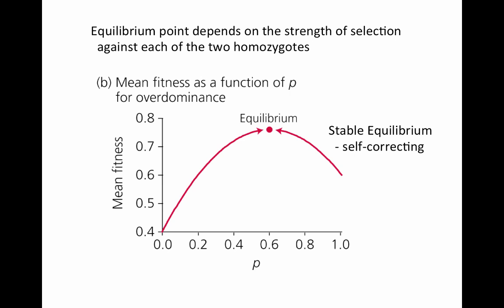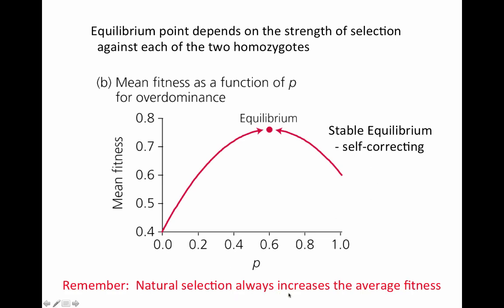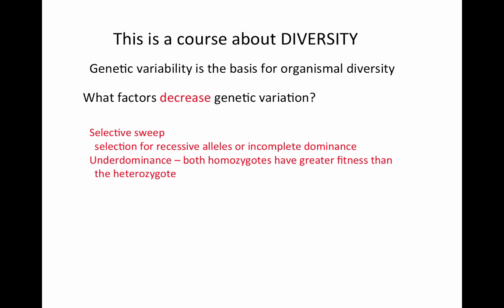The equilibrium frequency between the two alleles depends on the strength of selection against each homozygote. In sickle cell, the S homozygote is very strongly selected against, so the S allele is maintained at relatively low frequency compared to the A allele. This is a stable equilibrium — it is self-correcting. Because natural selection always increases average fitness, if other forces like genetic drift or migration move allele frequencies away from equilibrium, natural selection brings them back.